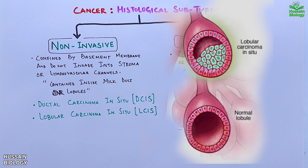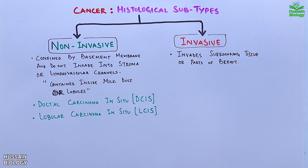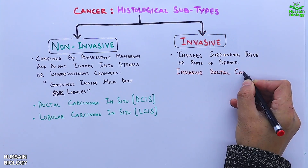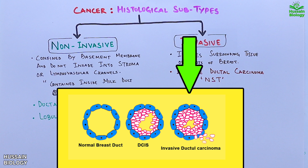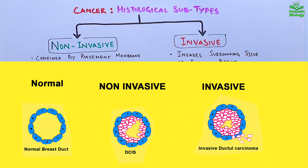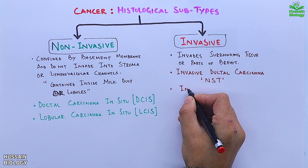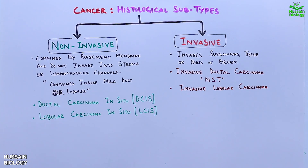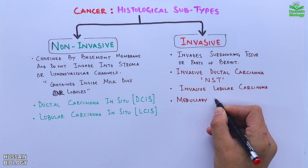There is also lobular carcinoma in situ (LCIS), as shown in the diagram — a cross-section of lobules showing an abnormal mass of growing cells within the lobules. Looking into invasive subtypes, we have invasive ductal carcinoma, that's NST (no special type), where we can see how cells separate out of the duct and invade surrounding tissue. The difference between non-invasive and invasive ductal carcinoma is also shown in the diagram.